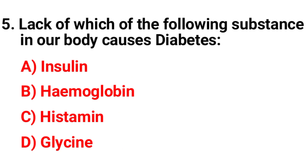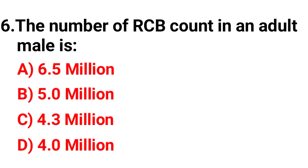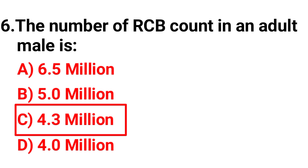Question five: Lack of which of the following substances in our body causes diabetes? Option A: insulin, option B: hemoglobin, option C: histamine, option D: glycine. The correct option is option A, insulin. Question six: The RBC count in an adult male is — option A: 6.5 million, option B: 5.0 million, option C: 4.3 million, option D: 4.0 million. The correct option is option C, 4.3 million.